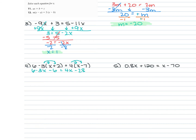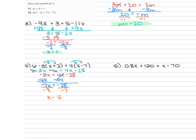Now we combine like terms. We combine 6 and negative 6, which cancel to 0. So we end up with negative 3X equals 4X minus 28. We remove the 4X by subtracting it from both sides. Combining terms gives us negative 7X is equal to negative 28. Divide by negative 7 and we get X is 4.